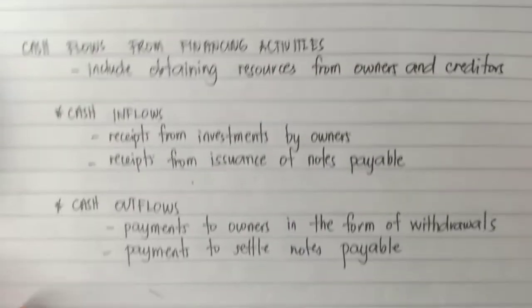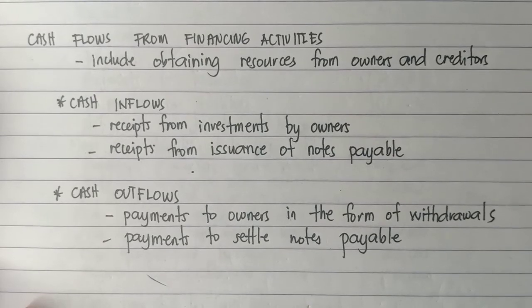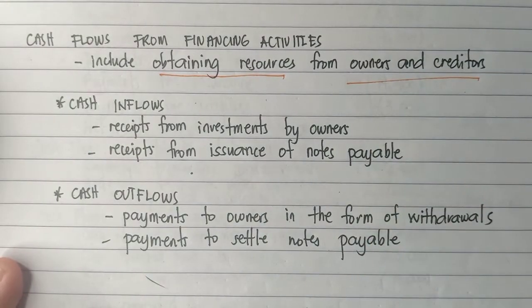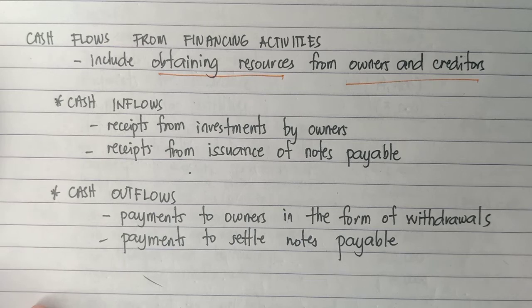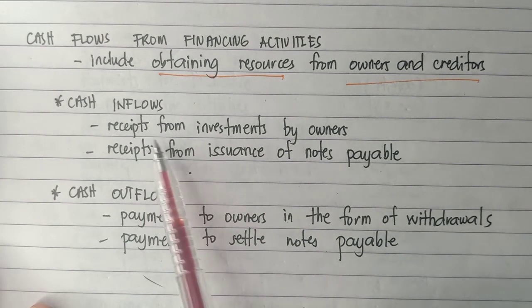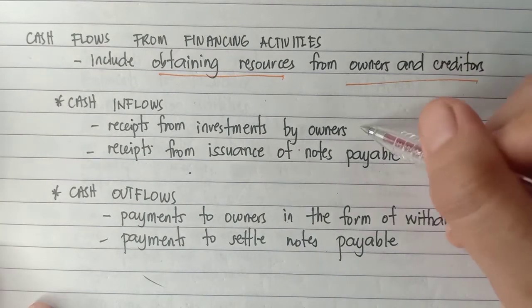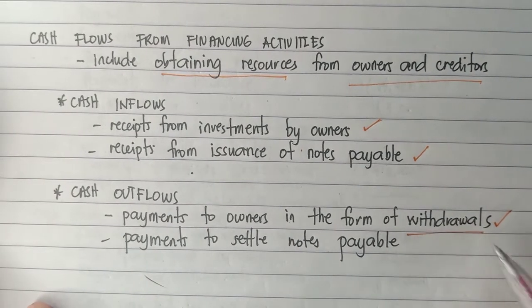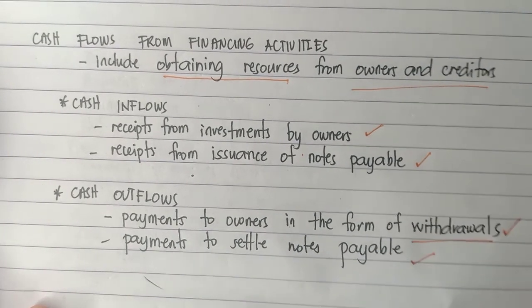Now let's proceed to cash flows from financing activities. Financing activities include obtaining resources from owners and creditors. For cash inflows, we have receipts from investments by owners and receipts from issuance of notes payable. For cash outflows, we have payments to owners in the form of withdrawals and payments to settle notes payable.